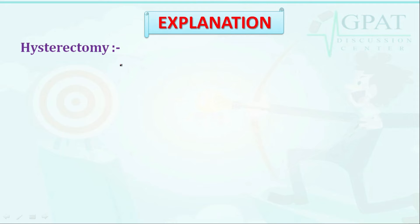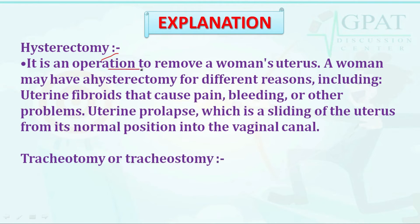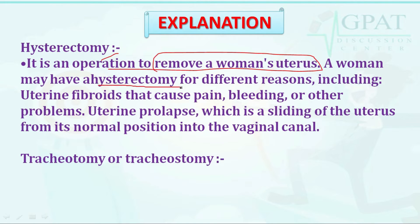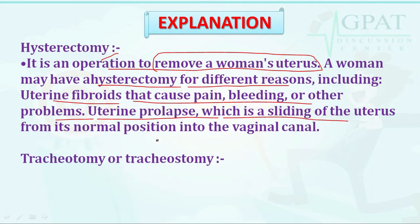Hysterectomy is an operation to remove a woman's uterus. A woman may have a hysterectomy for different reasons including uterine fibroids that cause pain, bleeding, or other problems, and uterine prolapse, which is the sliding of the uterus from its normal position into the vaginal canal.